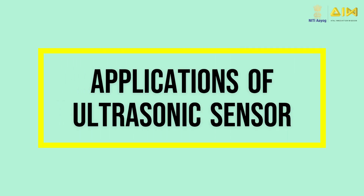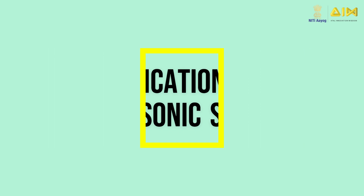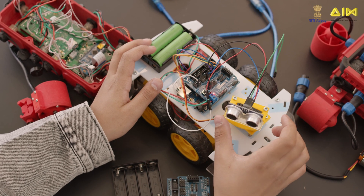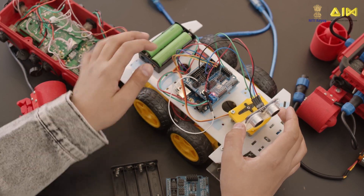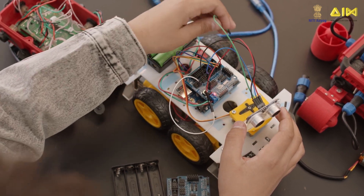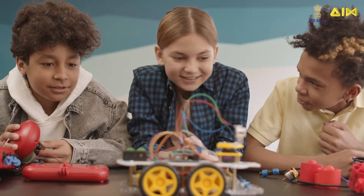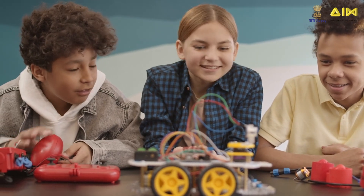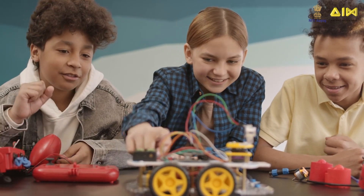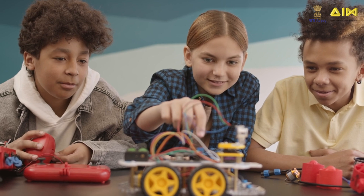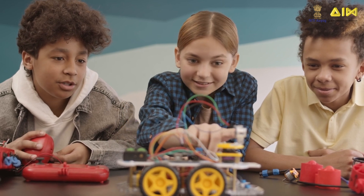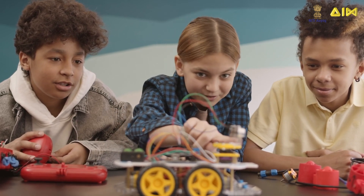Let's check out some practical applications of the ultrasonic sensor. An ultrasonic sensor is used to detect obstacles in a robotic device. When the sensor mounted on the robot detects an obstacle, it can make the robot back up or change direction and avoid hitting the obstacle. You can try building one in your ATL.